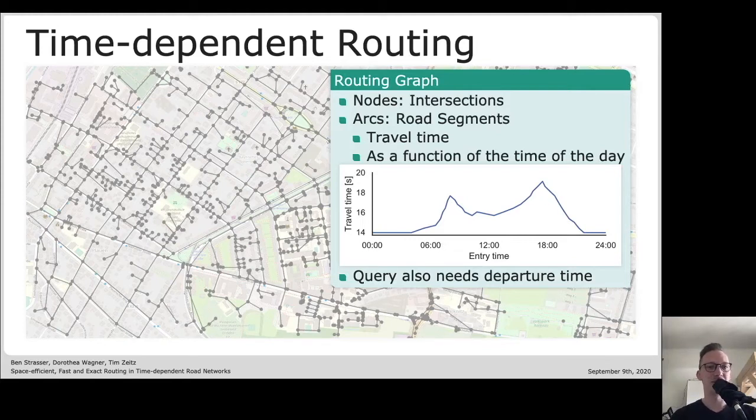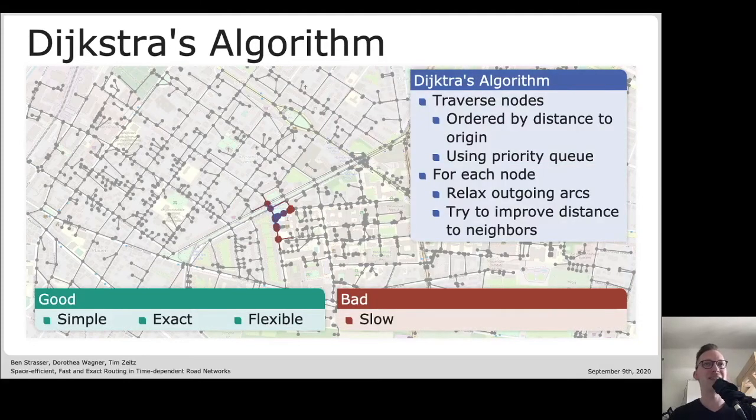In our case those functions are assumed to be piecewise linear and periodic, and usually they cover one day. Users during query time need also to specify a departure time because the fastest route might change during the day.